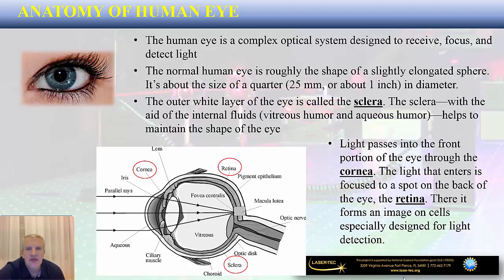The human eye is roughly shaped like a slightly elongated sphere, about a quarter of an inch in diameter. The outer white layer is called the sclera. The sclera contains internal fluids — specifically vitreous humor and aqueous humor — that help maintain the shape of the eye. Light passes through the front portion of the eye, the cornea, and then through the lens, which focuses all the light onto a small spot in the back of the eye called the retina.